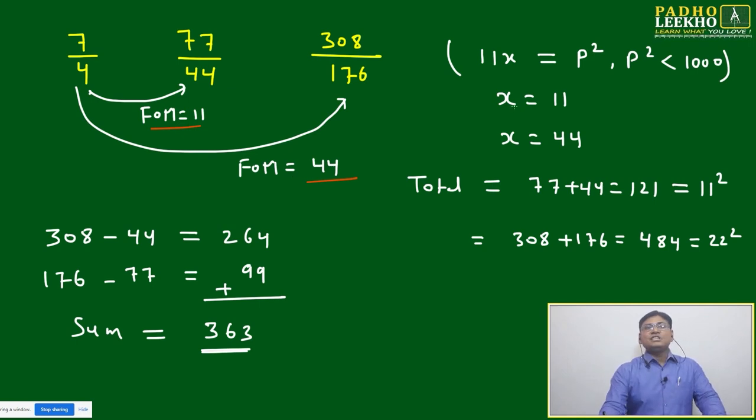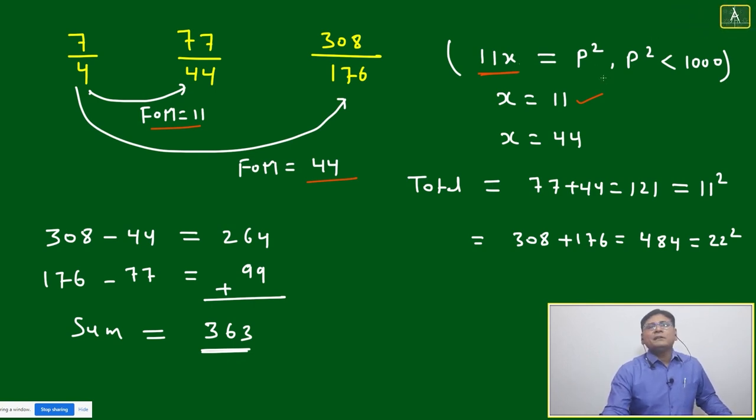Now you can say why we have taken factor multiplication 11 and 44? Because these two only option is there, these two only possibility. How very immediately we will able to understand these two only can be? Because once you are making the sum 11x where x is just common factor equal to p square, where p square is less than 1000, then x either it will be equal to 11 because this 11 is prime number, it cannot factorize, then x must be 11 to make it perfect square.